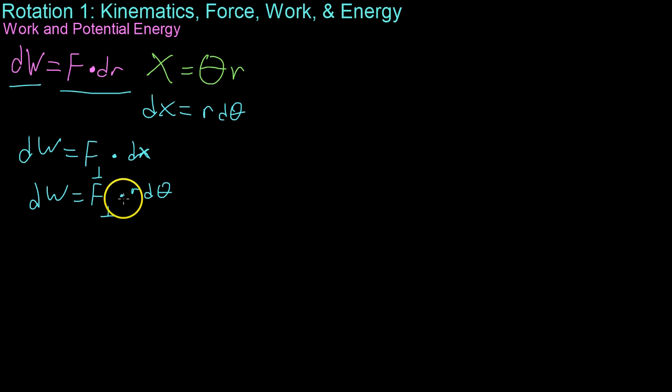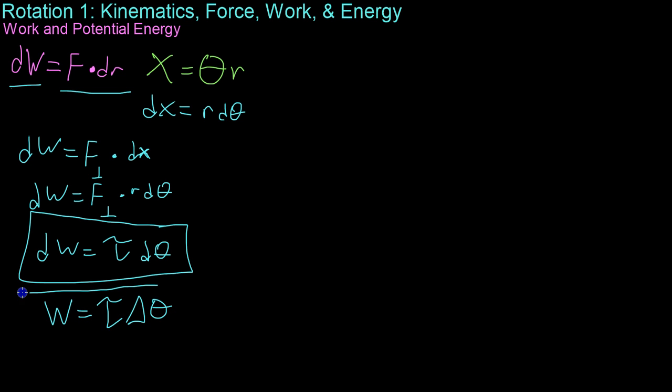And we know that work equals F perpendicular times r d theta. But we already know that F times r is the torque. So the work ends up being the torque times the infinitesimal change in theta. Or for constant torques, you get that work equals torque times delta theta, which makes sense because work in a non-rotational frame is force times delta x. Our rotational analog follows from the linear equivalent.